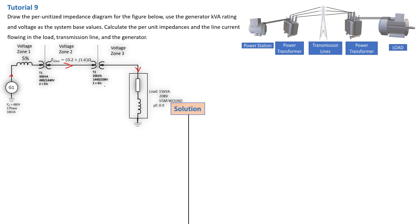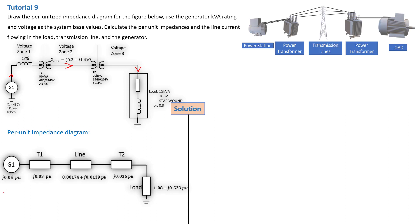So let's now draw the per unit impedance based on the per unit values that we have calculated. The per unit impedance diagram will be as follows: we have generator 1 with a per unit value of j0.05, transformer 1 is 0.03, and the line, because it is an inductive line, has both a resistive and an inductive element represented. Then we have transformer 2, purely inductive, and we have the load per unit values.